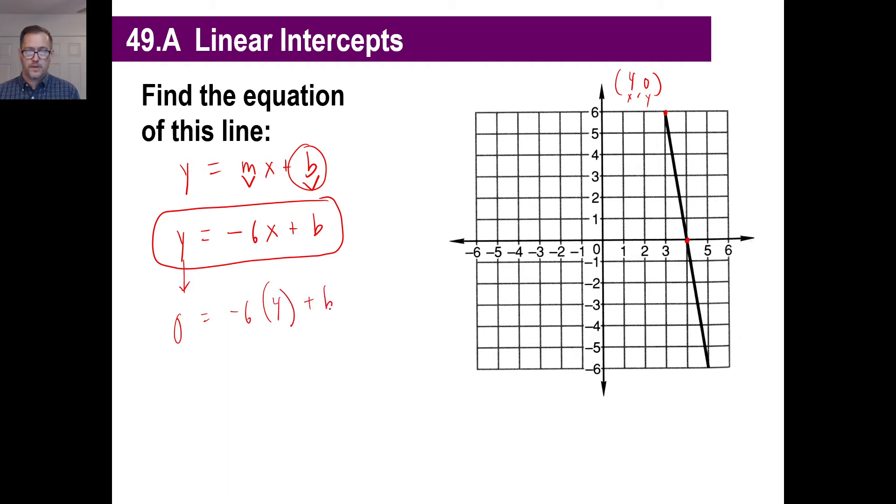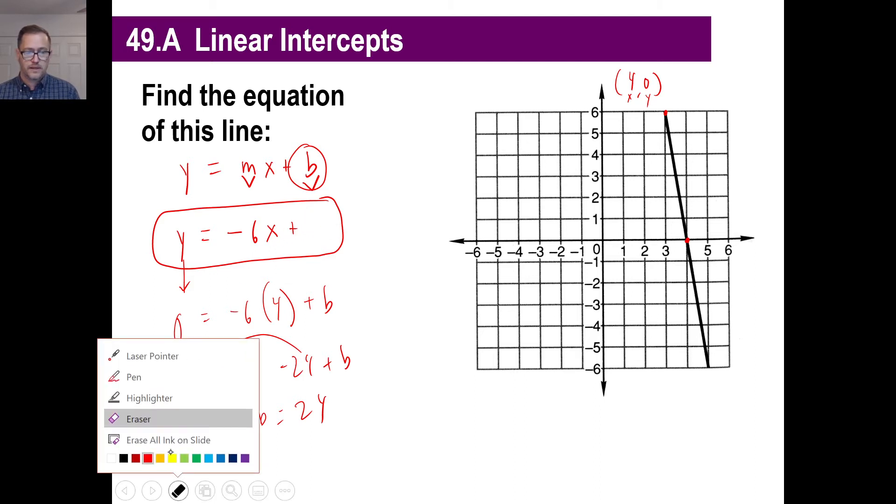We say the y is 0. Negative 6 times x, right? What is that? X is 4. And then plus B. All right. So, 0 equals negative 24 plus B. Well, flop that on over there. You get B is 24. So, there's your equation, right?